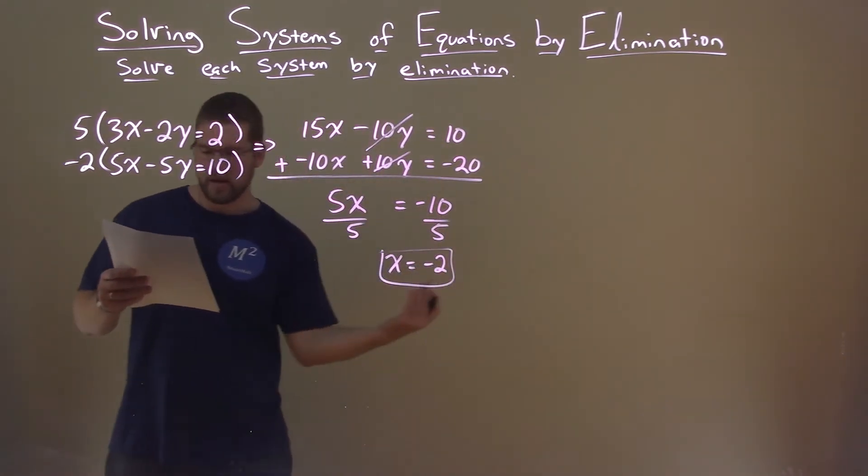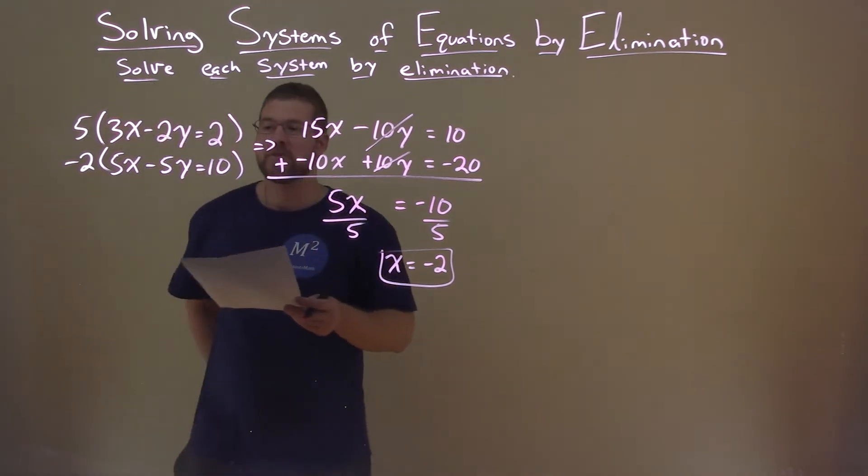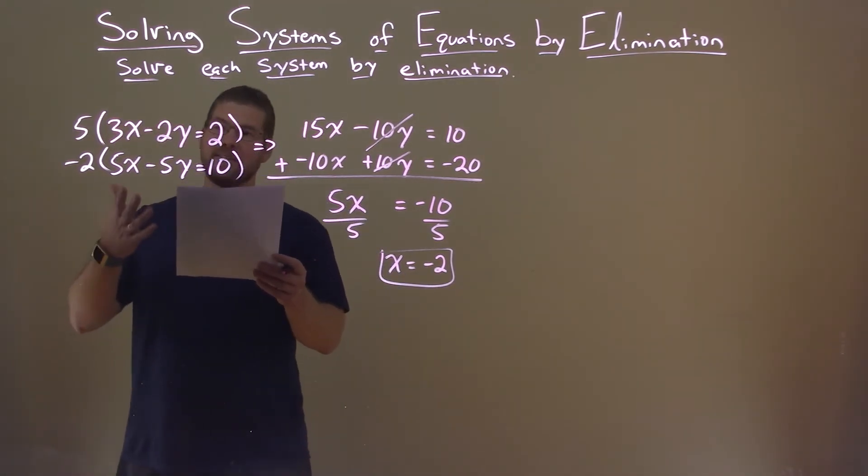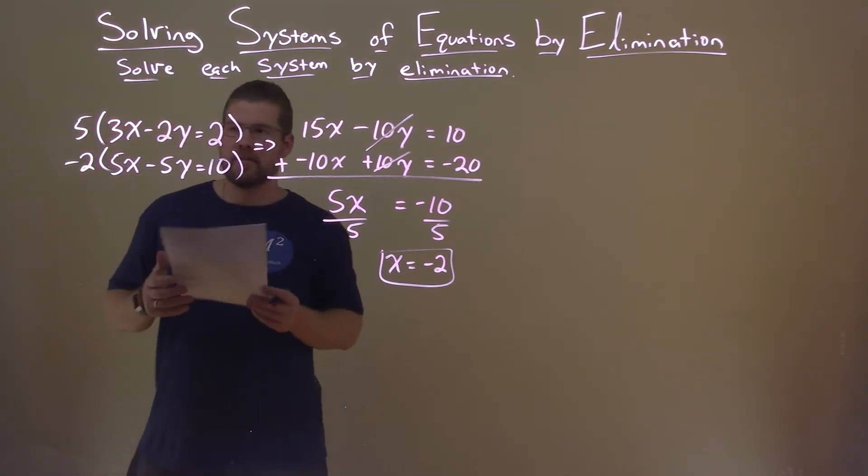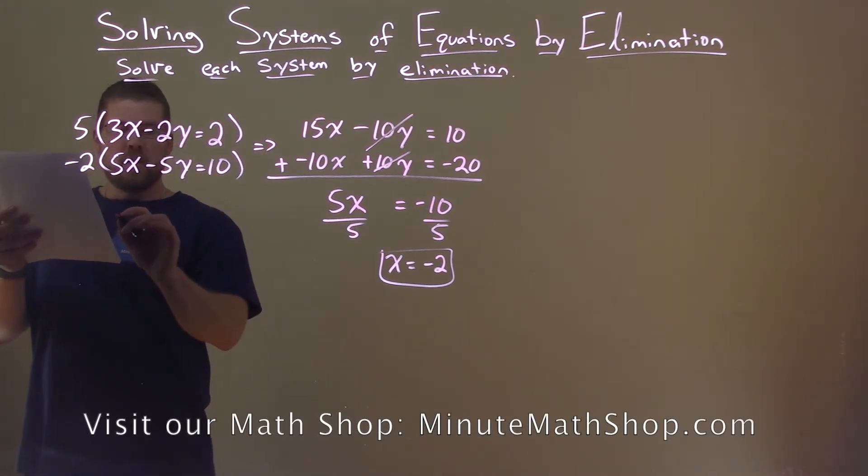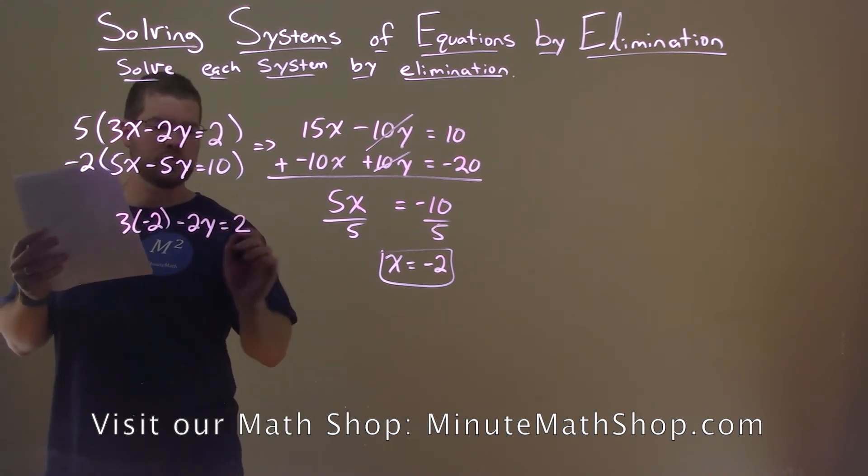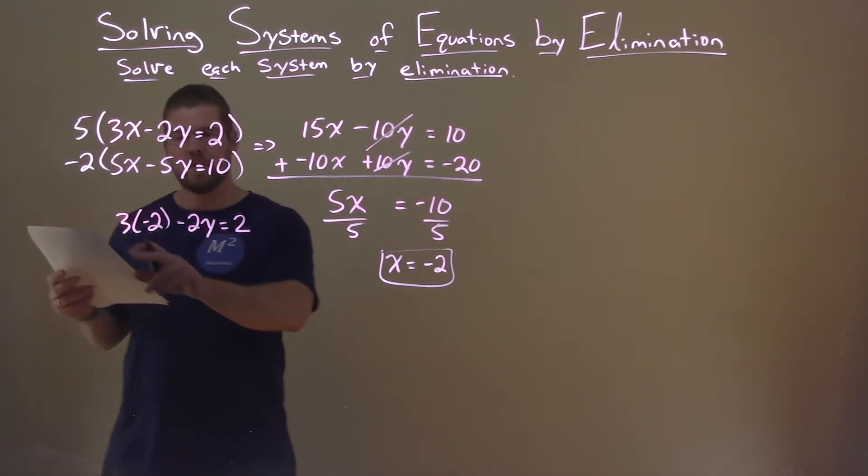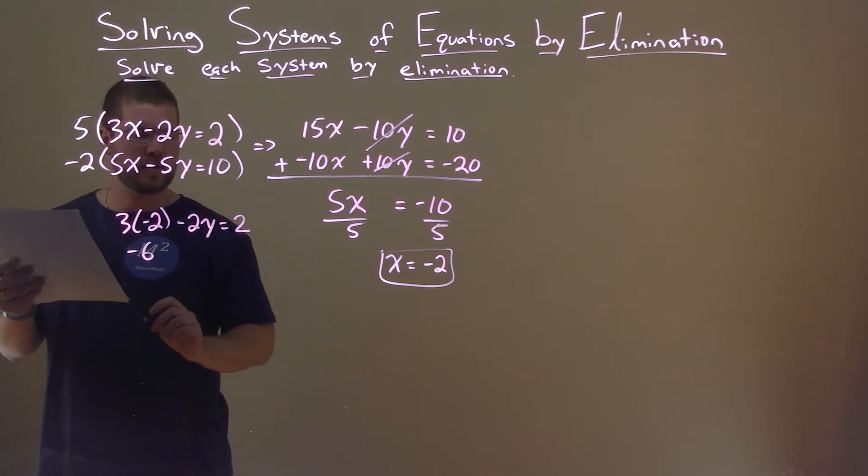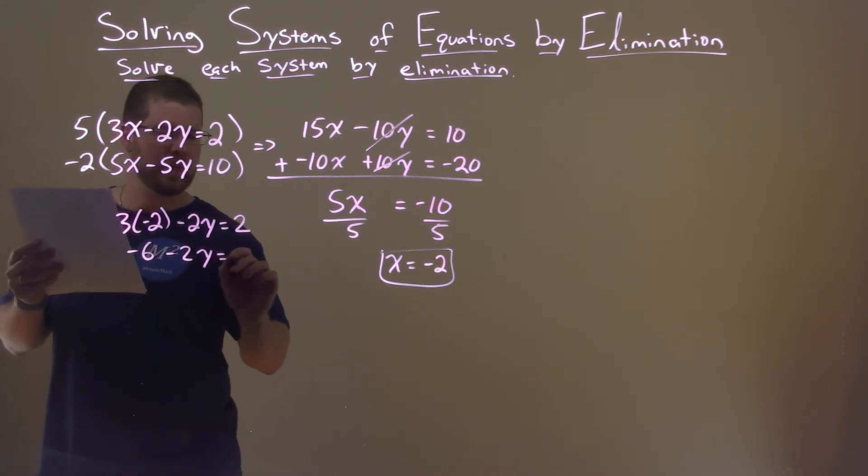We take that information and plug it into one of our equations to solve for y. Which one is easier? I think the top one. 3 times negative 2 instead of x, minus 2y equals 2. Let's solve for y. 3 times negative 2 is negative 6, minus 2y equals 2.